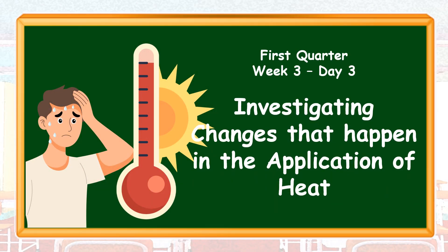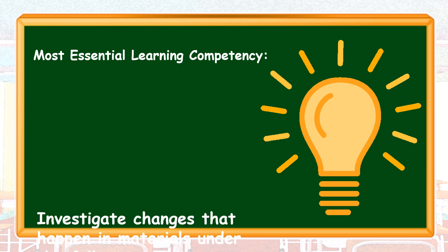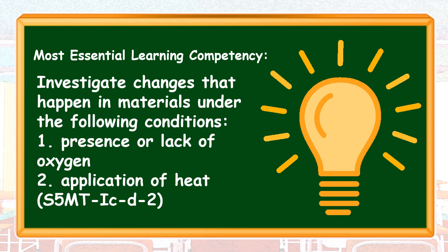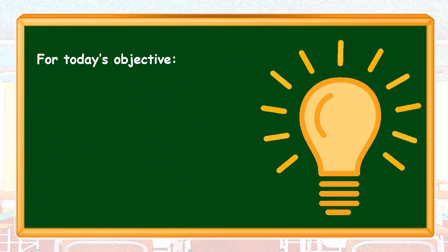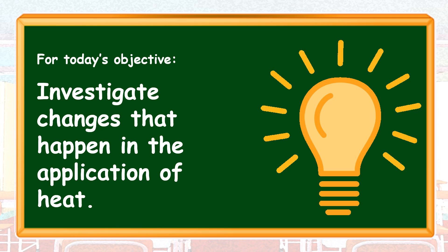Hi, kids! Welcome back. For today, we are going to discuss your lesson about investigating changes that happened in the application of heat. For our most essential learning competency: investigate changes that happen in materials under the following conditions — number one, presence or lack of oxygen, and number two, application of heat. For today's objective: investigate changes that happened in the application of heat.